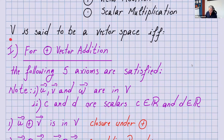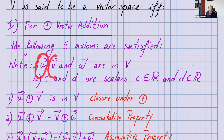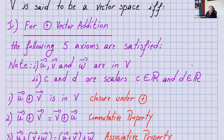For vector addition, the following five axioms must be satisfied. Before you start proving or checking if the axioms are satisfied, you need to have three vectors in that set — U, V, and W — which are in V. You also need two scalars, which I call C and D. Please define those before starting your proof, and C and D are real numbers.